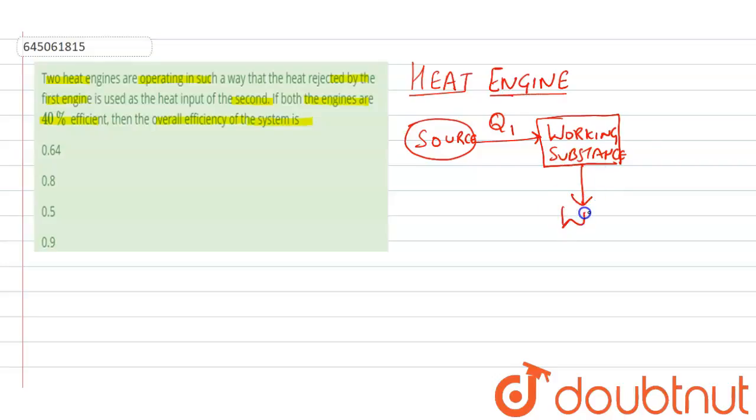It does some work and rejects the heat Q₂ to the sink. And the efficiency of heat engine is written as η = 1 - Q₂/Q₁.